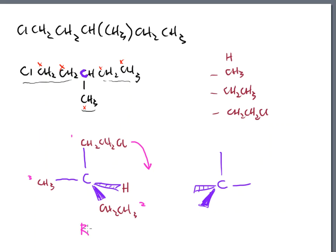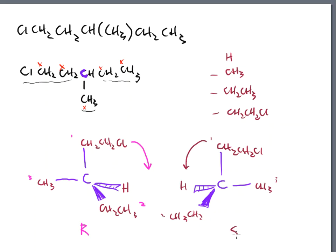Now I need the mirror image. The top group doesn't move; my methyl group flips over to this side; CH2CH3 stays forward and H is there. The low priority group is still pointed to the back. Looking at the rotation: rank one, rank two, rank three - the arrow points to my left hand, so therefore this is the S form of that molecule.